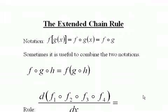The extended chain rule. We're going to look at some notation for composite functions here, and this is f of g of x. In other words, you take f and you plug g of x in instead of x.